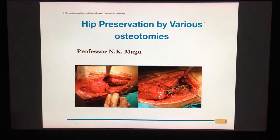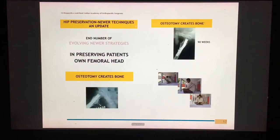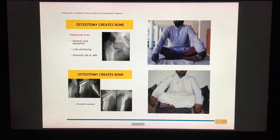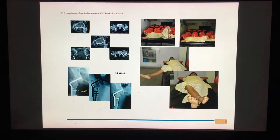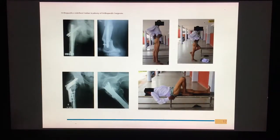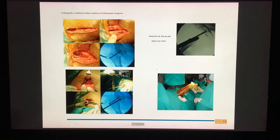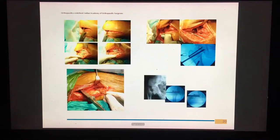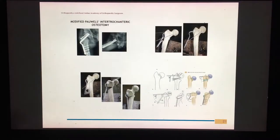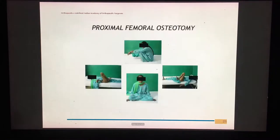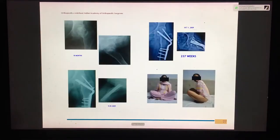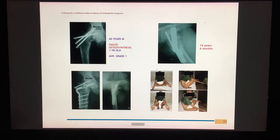The first chapter is on hip preservation by osteotomies by Professor NK Magu. He discusses the time-honoured procedure of hip osteotomy for various hip conditions, focusing on the use of a simple, humble condylar plate to preserve the hip joint, giving long-lasting function unlike an arthroplasty that needs repeated revisions.